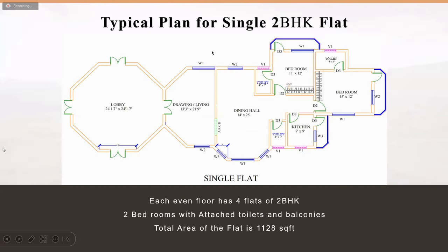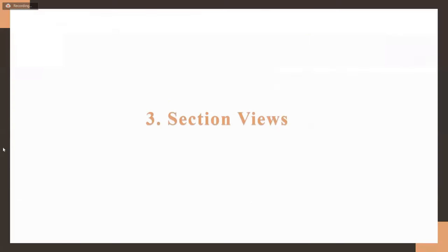This is the typical plan for a 2BHK flat. The total area of this flat is 1,128 square feet. There are two main bedrooms with attached toilets and balconies, a dining hall, a drawing room, a common toilet, and a kitchen. In total there are 32 2BHK flats and 32 3BHK flats per tower.